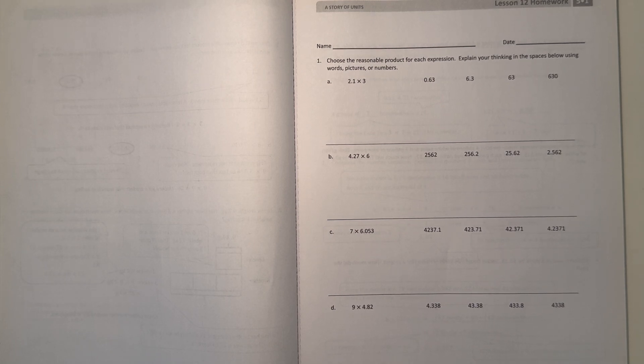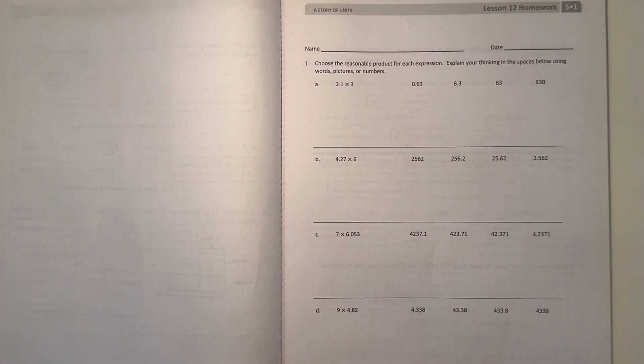Alright, so number one, choose a reasonable product for each expression. Explain your thinking in the spaces below using words, pictures, or numbers. Alright, so A,